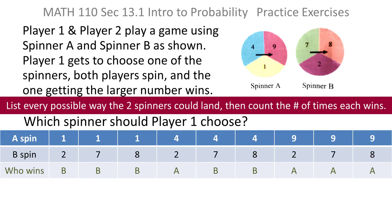So the question is, as it was before, which spinner should Player 1 choose? Obviously, he or she should choose the spinner that wins most often, and if you look, it should be B.